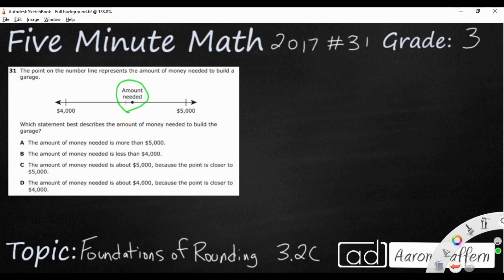You just have 4,000 on one side and 5,000 on the other. You've got a midpoint, the amount needed, and then which statement best describes. Three of the statements are incorrect and one is correct.